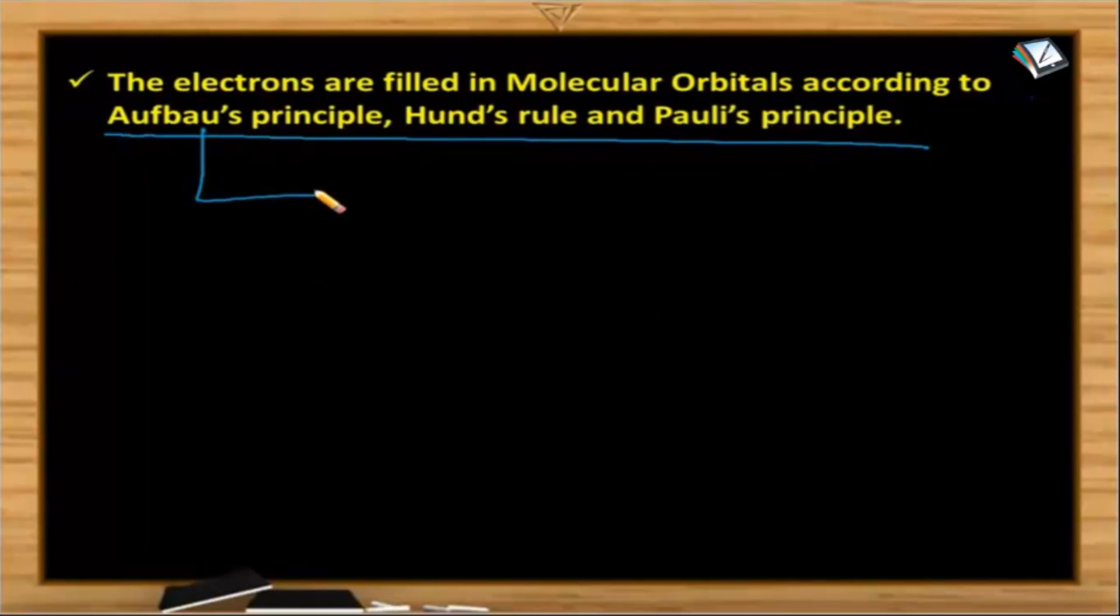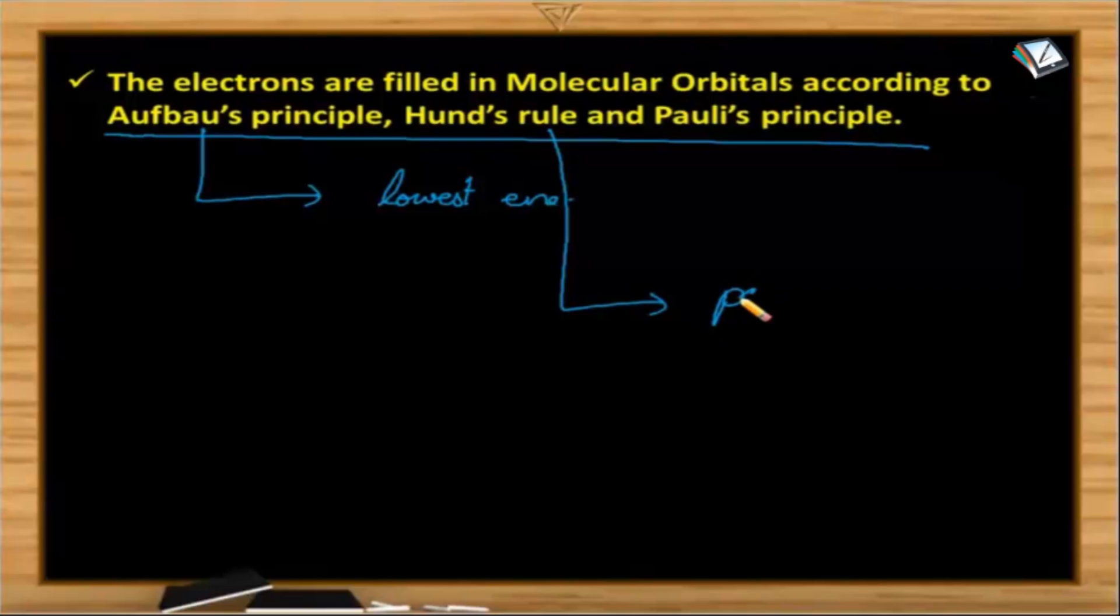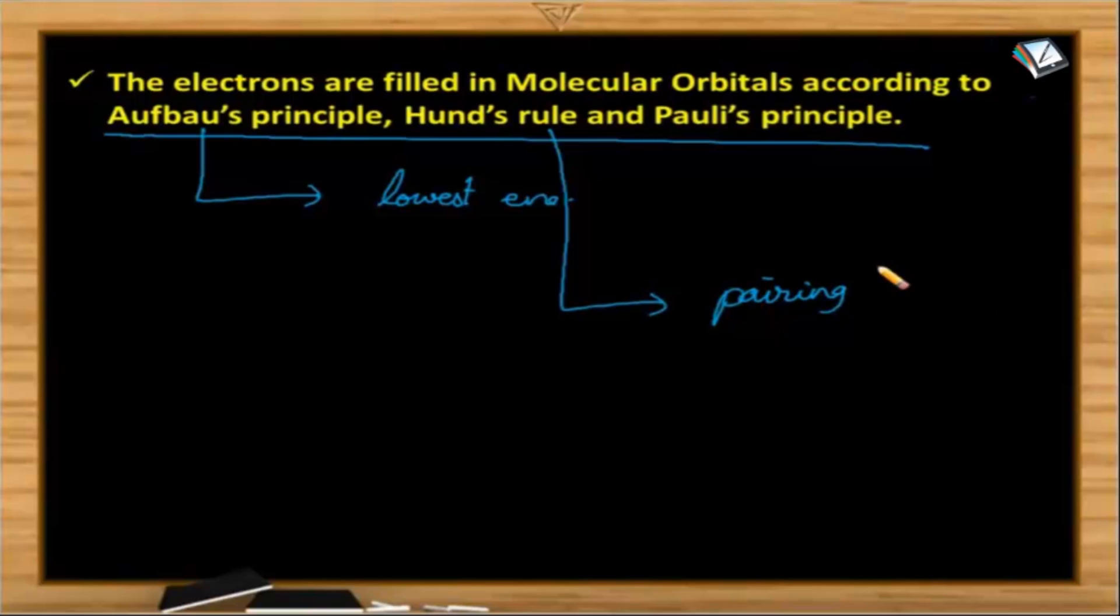One is the Aufbau principle. What is Aufbau principle? Electron always enter into the orbitals of lowest energy. What is Hund's rule? Whenever degenerate orbitals are available, pairing of electrons takes place only when all the orbitals are filled with one electron each.